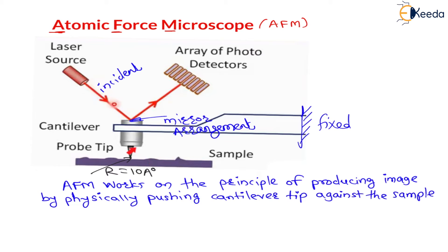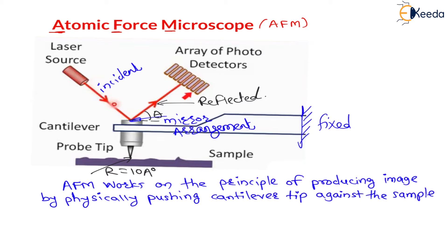Because of nano irregularities on the sample, this tip will move in the upward and downward direction. As this tip moves, this cantilever will also get motion in the upward and downward direction. Because of this, the incident angle on the mirror arrangement changes, so there will be reflected rays from this mirror arrangement. The laser light gets reflected, and because of this upward and downward motion, the angle of reflection, theta, gets changed. This reflected laser light gets collected with the help of an array of photo detectors, and this tip motion is analyzed.